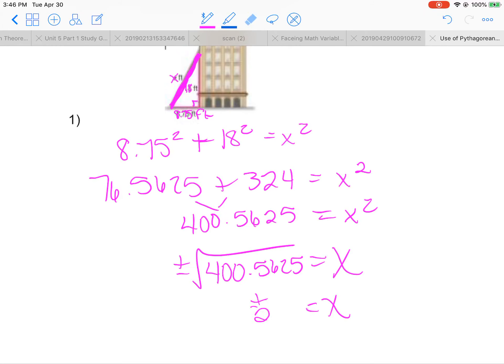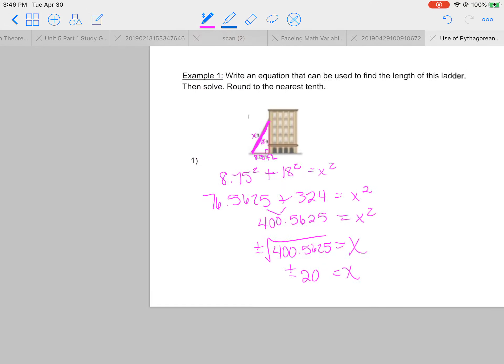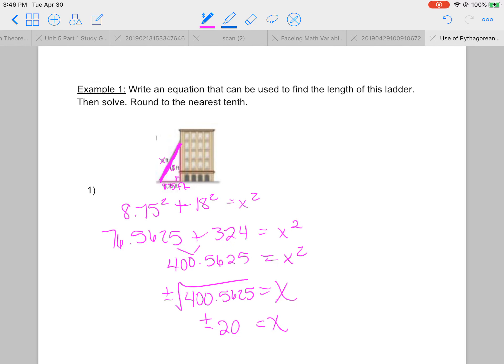Plus or minus 20. Remember with square roots, you always have a positive and a negative, but it would not make any sense at all for the ladder to have a negative length.